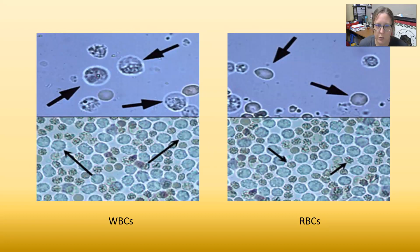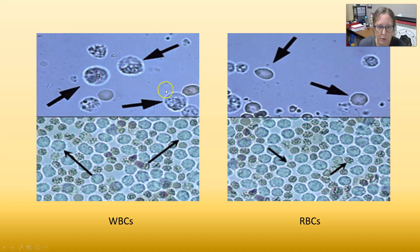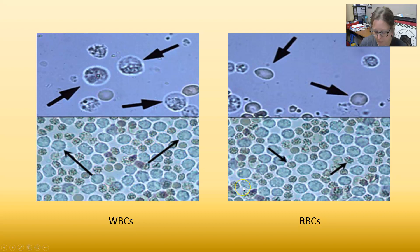This photo shows white cells and red cells. The bigger ones with visible granulation are white cells, and the smaller ones are red cells. On the bottom portion of the photo, the larger ones are white cells and the smaller ones are red cells.